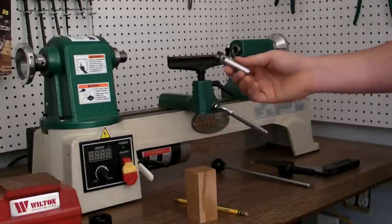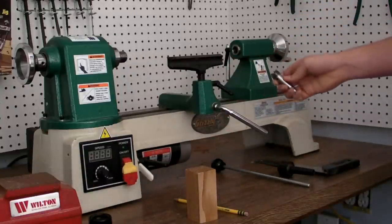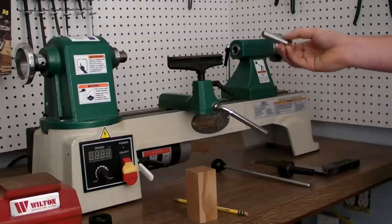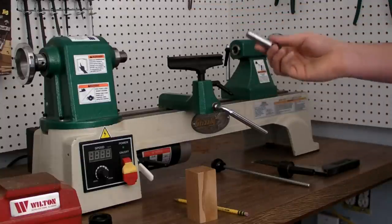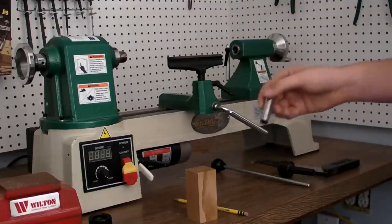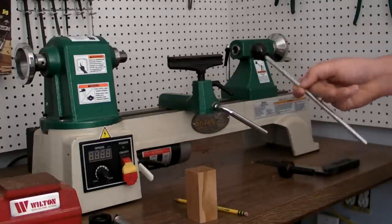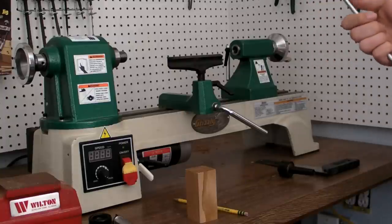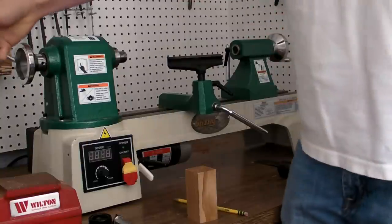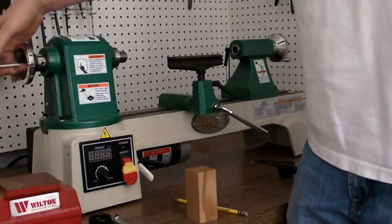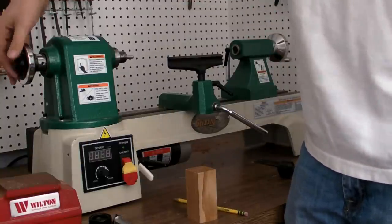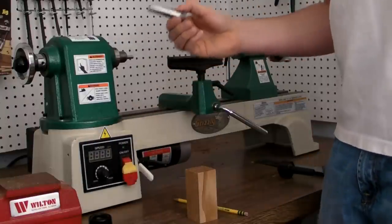We have the spur. The spur is used in conjunction with the tail stock in order to mount pieces in a spindle setup, which is what we're going to be going over in this video and the next video. The knockout rod is pretty basic. It's a piece of metal that will slide into your head stock and allow you to knock out the spindle when it's put in.